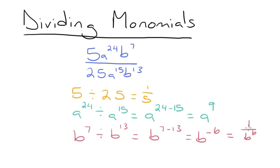Now to get our answer, we multiply all three parts together. We'll have 1 fifth times a to the 9th times 1 over b to the 6th. We can simplify this all into one fraction, and we'll get a to the 9th over 5b to the 6th. I hope that this video on dividing monomials was helpful. Thanks for watching, and happy studying!